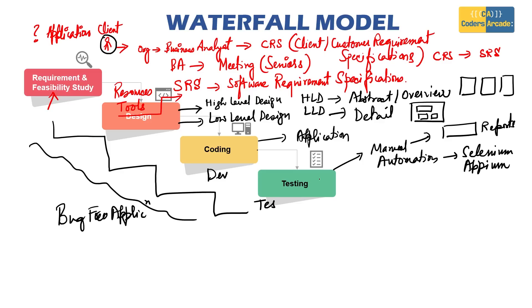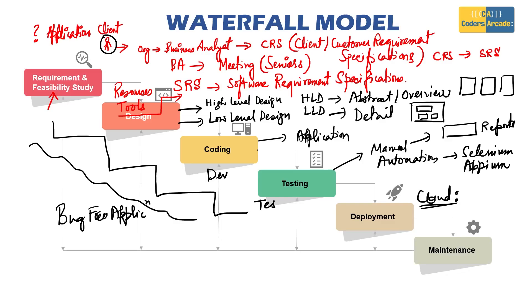After testing is complete and everything is fine, the next phase is deployment. They use various tools to deploy the application — you can use AWS, and in our case we'll be learning about Azure deployment. Any cloud server can be used. After deployment comes the maintenance phase. Because changes are not entertained in the waterfall model, this is a major drawback, and therefore we move from these traditional models to more modern ones — such as the Agile model.